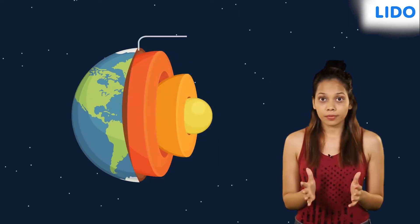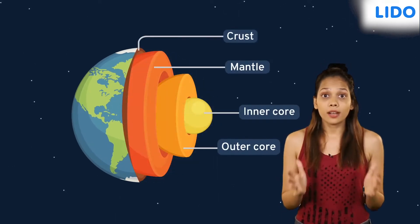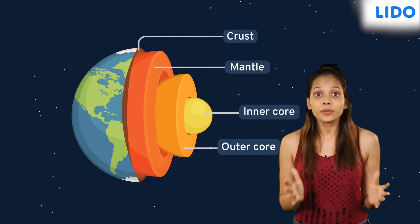Earthquakes are caused by disturbances deep inside the earth's crust. The crust, which is the earth's outermost layer, is divided into several huge plates called tectonic plates.